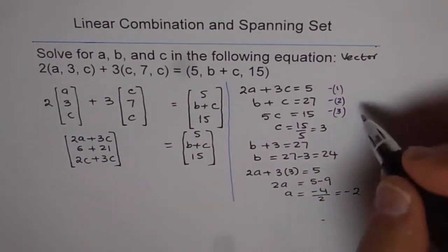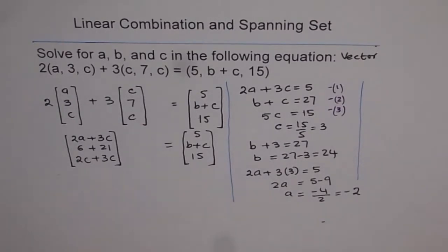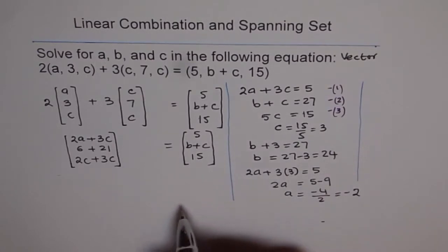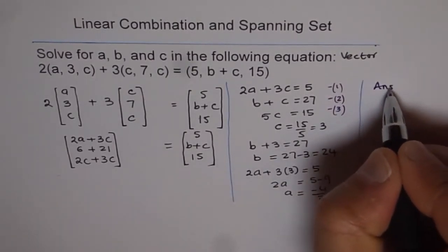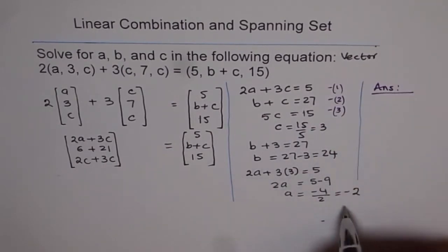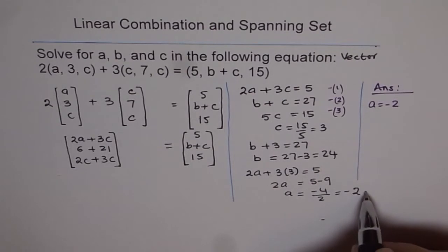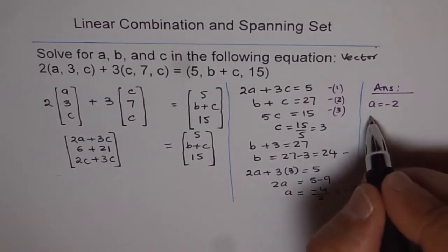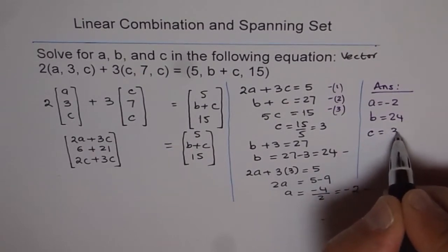Thereby, we can solve for the three unknowns and write down our answer. Our answer here is, a is equals to minus 2, b is equals to 24 and c is equals to 3.